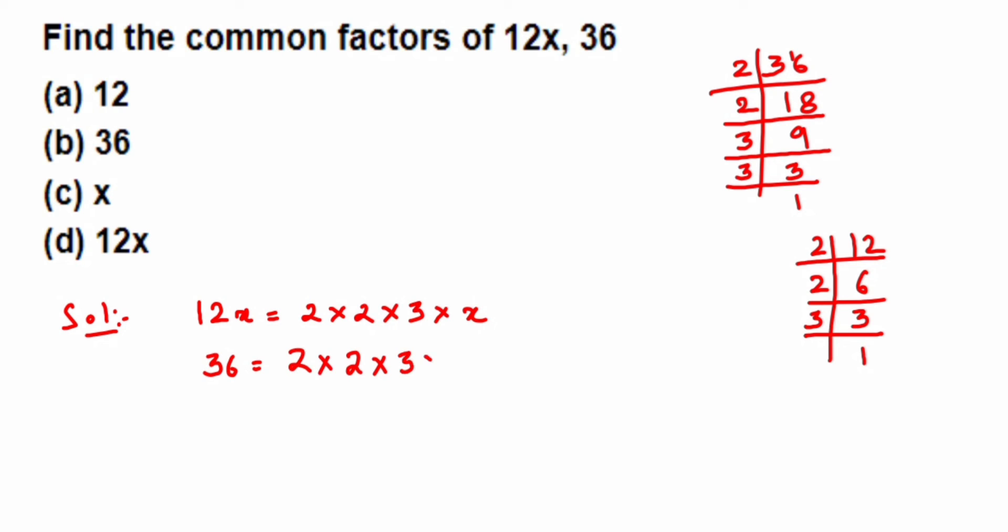Now we have to find out the common factors. You can see here one 2 is common, and again one more 2 is also common, and one 3 is common. These common factors, we have to just multiply. So the common factor will be equal to 2 × 2 × 3, which is nothing but 12. So the answer will be option A.